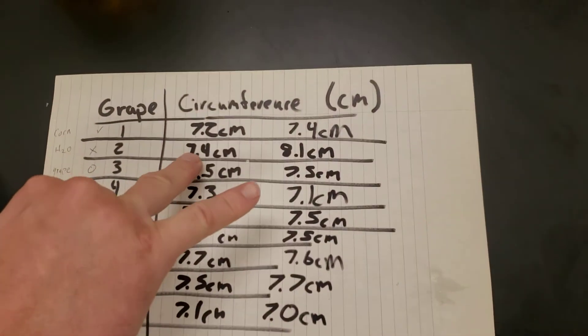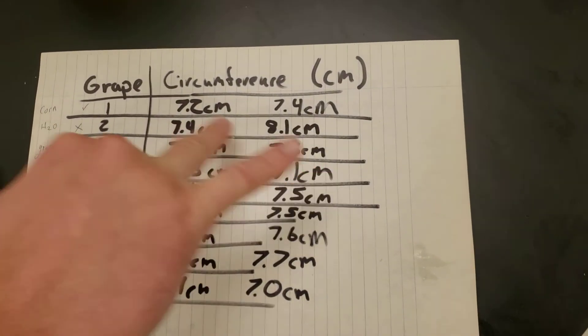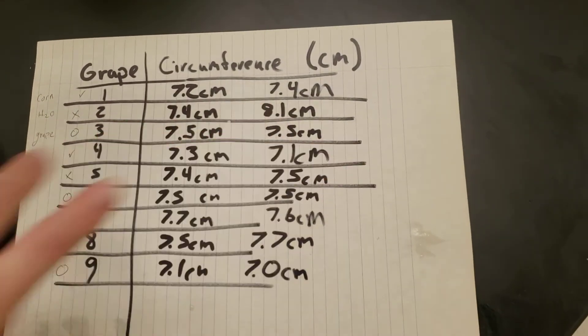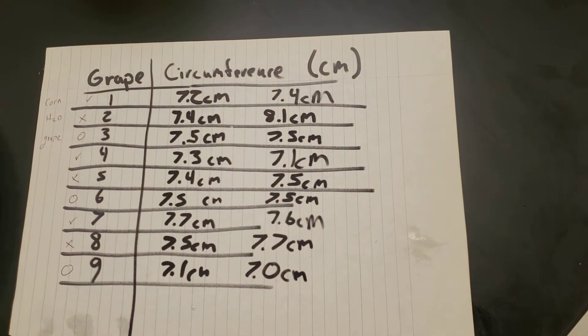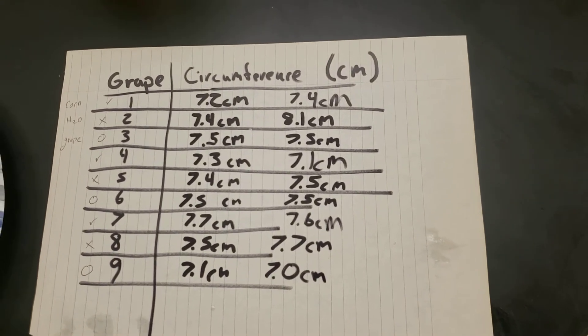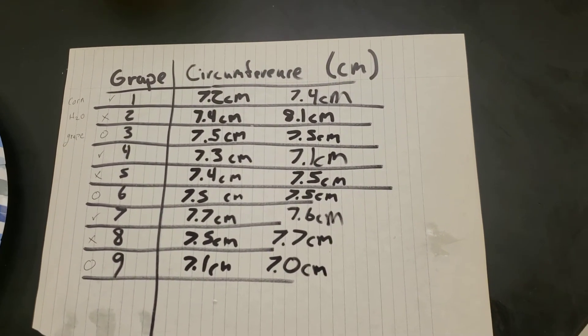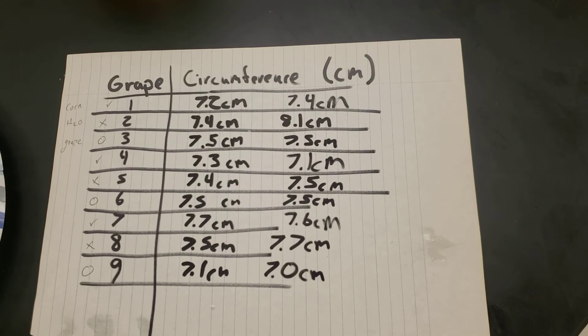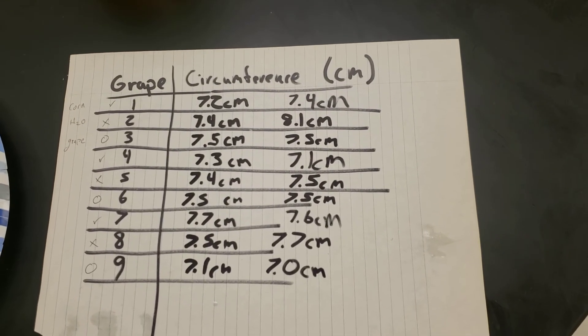Yesterday it was 7.4 centimeters, today it is now 8.1. You guys are going to get that for all nine grapes as Mr. Faud is showing you here on the camera, and we will have that for you guys later on this week.